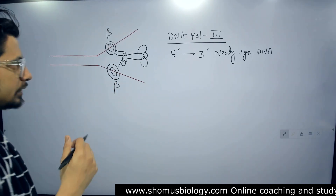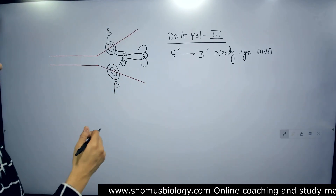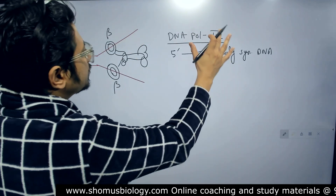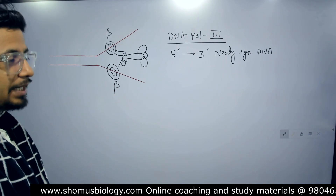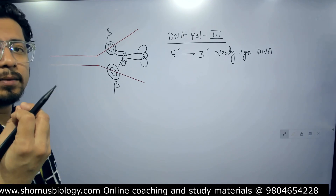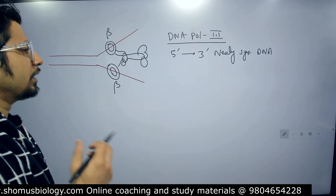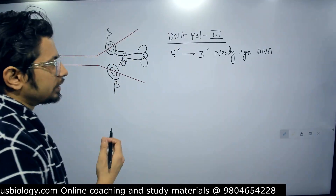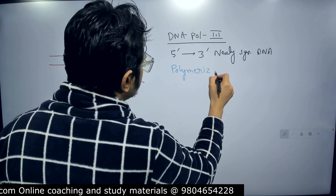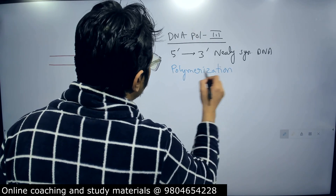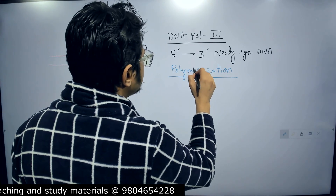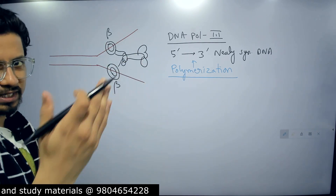Next, we need to understand how exactly DNA Polymerase 3 is loaded, how it initiates the process, and why it is considered the primary enzyme for DNA replication in prokaryotes. The polymerase needs to polymerize, which is the most important job while replicating a DNA strand. The directionality of polymerization is 5 prime to 3 prime of the newly synthesizing strand.